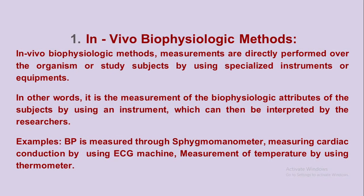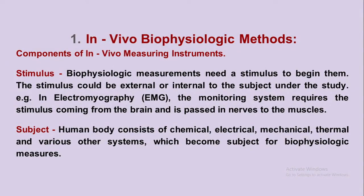In vivo biophysiological method: measurements are directly performed on the organism or study subjects using specialized instruments or equipment. In other words, it is the measurement of the biophysiological attributes of subjects using an instrument which can then be interpreted by the researcher. Examples include BP measured with a sphygmomanometer, the conduction system of the heart measured with an ECG machine, and temperature measured with a thermometer. There are specific components related to in vivo measuring instruments.